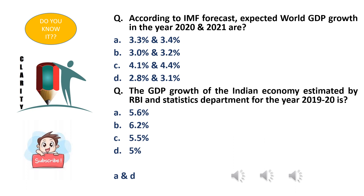Moving on to the next question: according to the IMF forecast, the expected world GDP growth in the years 2020 and 2021 are: option A - 3.3% and 3.4%, option B - 3% and 3.2%, option C - 4.1% and 4.4%, option D - 2.8% and 3.1%. As mentioned, the IMF forecasts and analyzes not only individual countries' GDP but also the world GDP. The right answer is option A - 3.3% and 3.4%.